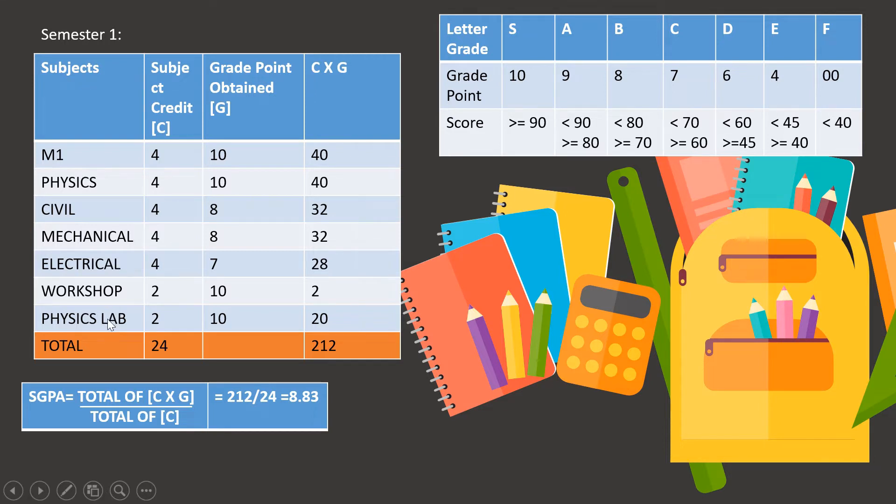First, list down all your subjects. So here I've taken the physics cycle subjects: M1S Mathematics 1, Physics, Civil, Mechanical, Electrical, Workshop and Physics Lab.